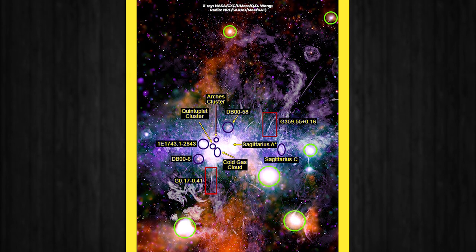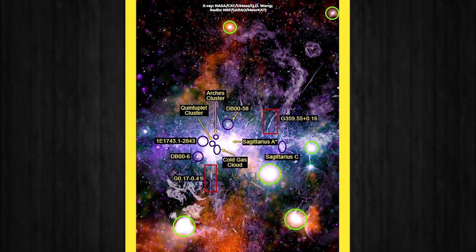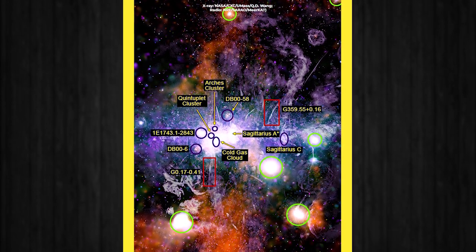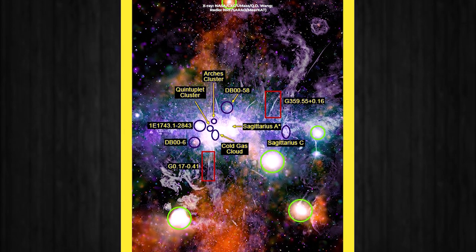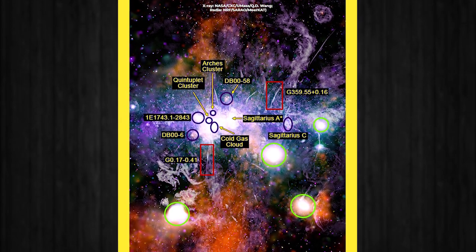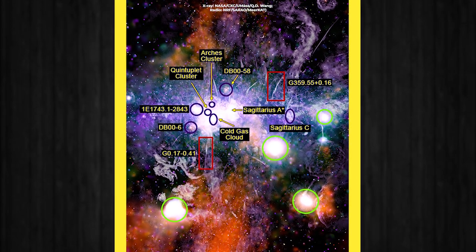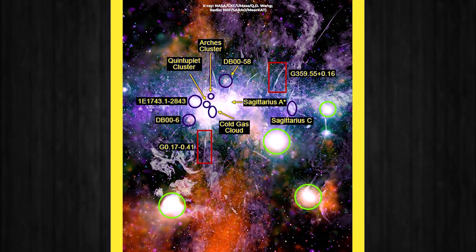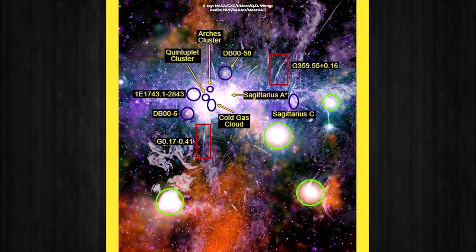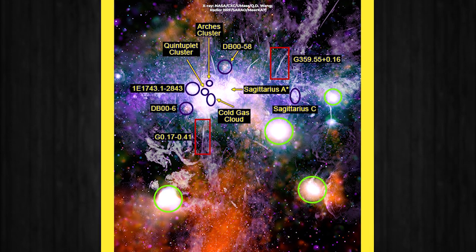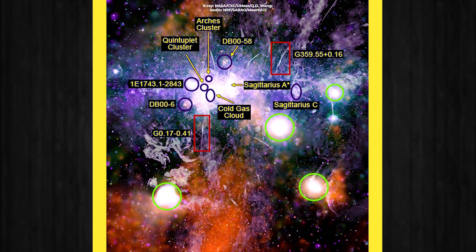The panorama also documented an X-ray thread called G0.17-0.41. Researchers say it suggests a mechanism that could control the energy flow and even the evolution of the Milky Way. Wong thinks this thread could serve as evidence of magnetic field reconnection.